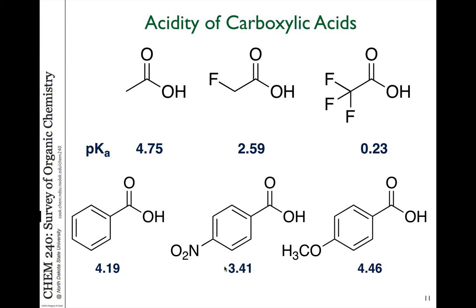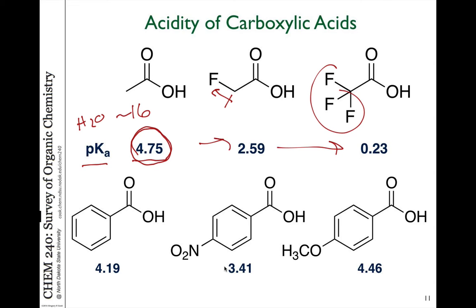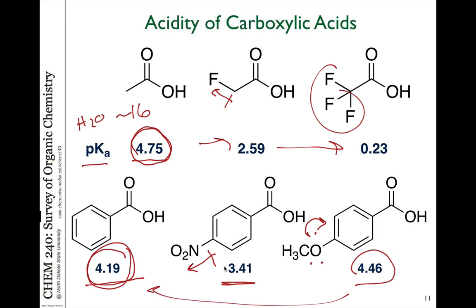In chapter two, we discussed acidity and pKa. Acetic acid has a pKa of 4.75 compared to water, which has a pKa of around 16, so water and alcohols are much less acidic than carboxylic acids. If you put electron-withdrawing groups on the molecule, you get lower and lower pKa values from the parent compound because of inductive effects helping to stabilize the negative charge formed in the conjugate base. We can see this in benzoic acid derivatives: benzoic acid itself has a pKa of 4.19, the para-nitro group (electron withdrawing) makes it more acidic, and the methoxy group (electron donating) makes it less acidic than the parent benzoic acid.